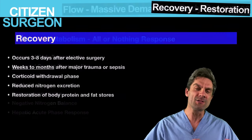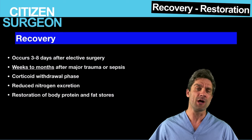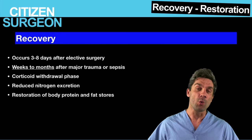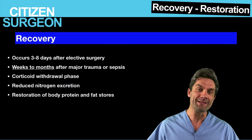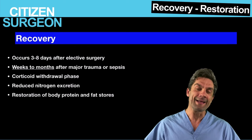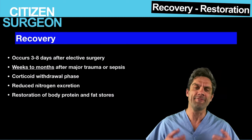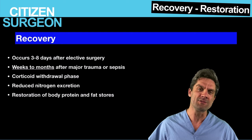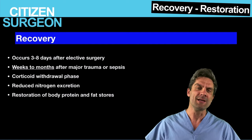The transition from the flow phase to recovery happens within three to eight days after elective surgery and much longer after major trauma, sepsis, and injury. This is also known as the corticoid withdrawal phase — this is where you begin to get a cessation of that proteolysis and an increase in protein synthesis or rebuilding. This phase also coincides with the diuretic phase as you have increased oral intake and decreased ADH and aldosterone, leading to diuresis because the body is no longer in that fight-or-flight response. Aldosterone, ADH, renin, and angiotensin 2 all begin to decrease, leading to decreased circulating volume and an increased return back to the normal state.